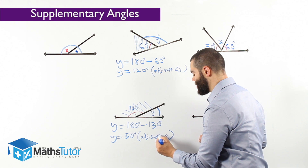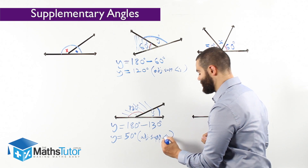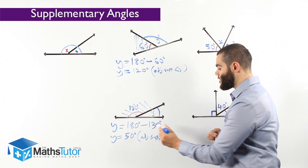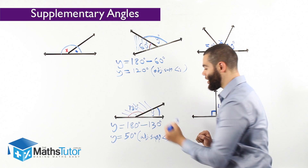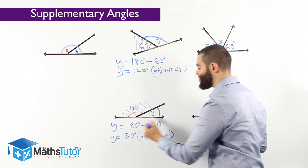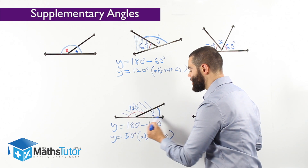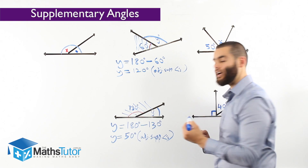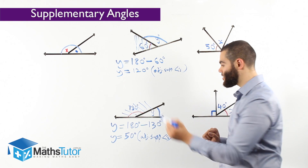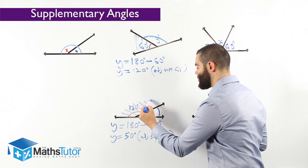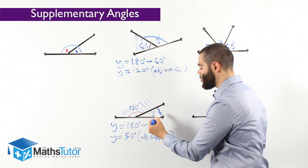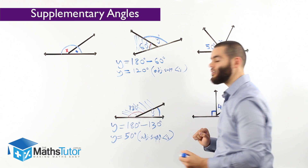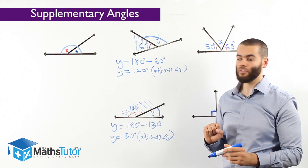Adjacent supplementary angles — this is the reason how we worked out y. Because this is a straight line that is 180 degrees, take away 130 on this side, and we're left with y. Y is 50 degrees.